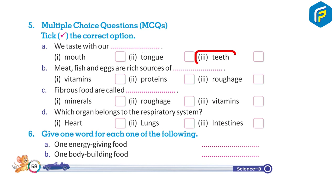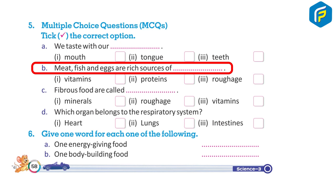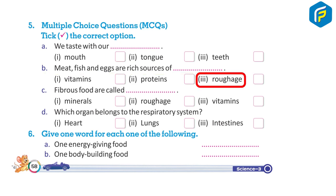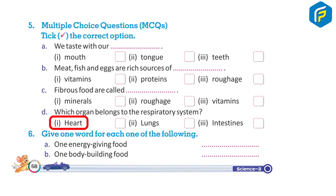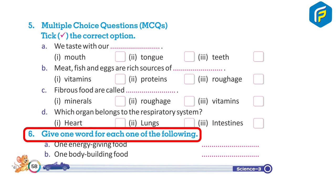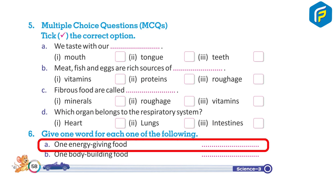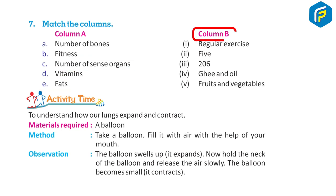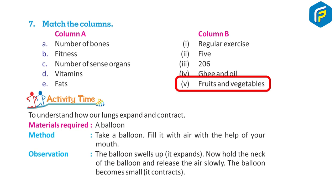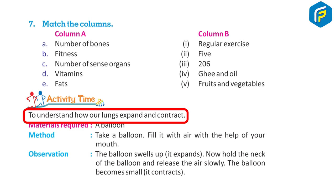Multiple choice questions: We taste with the tongue. Meat, fish, and eggs are sources of proteins. Fibrous foods are called roughage. Lungs belong to the respiratory system. Give examples of one energy-giving food and one body-building food. Match the columns: 206 bones, regular exercise for fitness, five sense organs, vitamins from fruits and vegetables, and fats from ghee and oil.